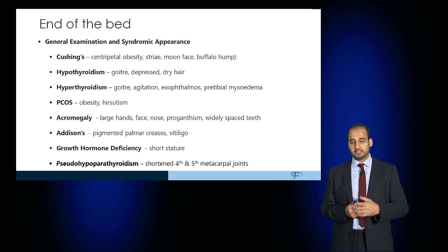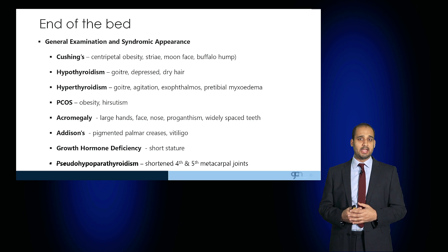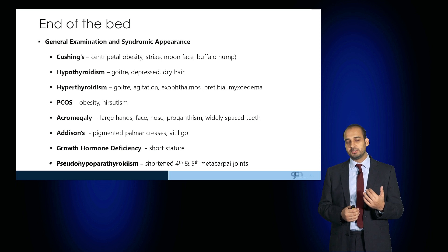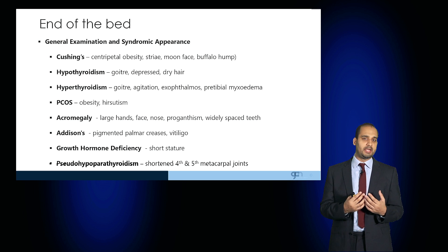Patients with Cushing's disease may have centripetal obesity, obvious striae, a moon face and a buffalo hump. Hypothyroid patients may have a visible goiter or may appear depressed with dry hair.